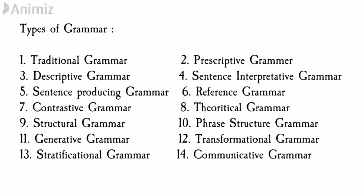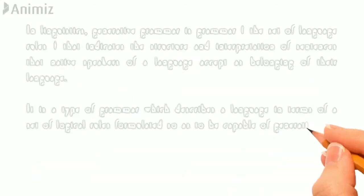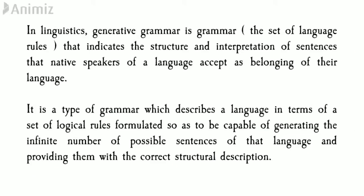According to Wikipedia, in linguistics generative grammar is the set of language rules that indicates the structure and interpretation of sentences that native speakers of a language accept as belonging to their language. It is important to understand that generative grammar is a specific type of grammar — it summarizes a set of language rules indicating the structure and interpretation of sentences accepted by native speakers.